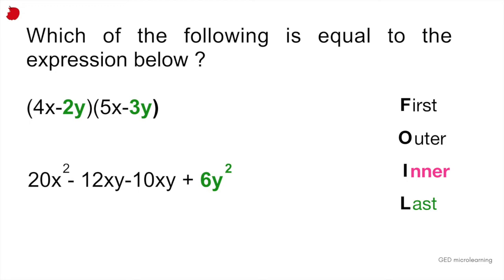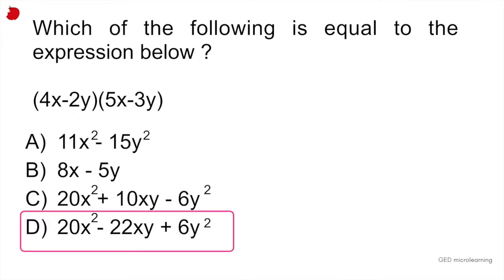You've solved the expression by multiplying out all of these numbers. And now all you have to do is simplify. By simplify, I mean if you look at that minus 12xy minus 10xy, that would give you minus 22xy. That's what the equation is simplified to. The correct answer would be D.